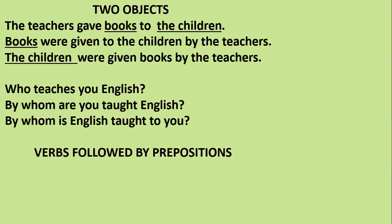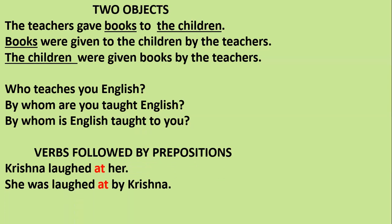For verbs followed by prepositions, you need to retain that preposition. Example: 'Krishna laughed at her.' 'Her' must be changed to 'she', and 'laughed' is past tense so use 'was + past participle': 'She was laughed at by Krishna.' You write 'by Krishna' as the agent — the doer of the action.